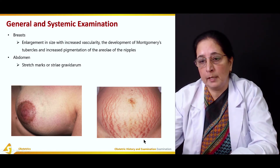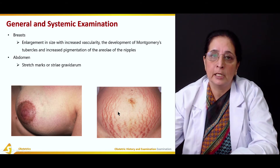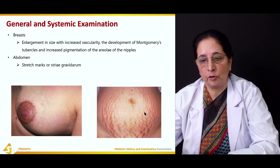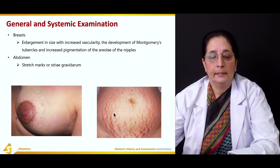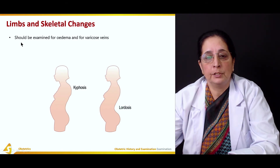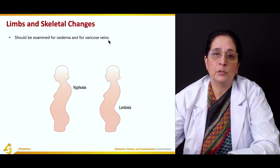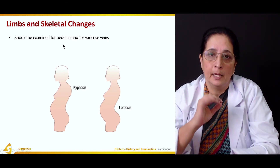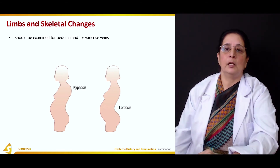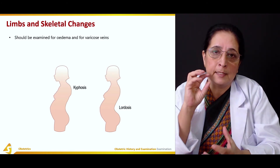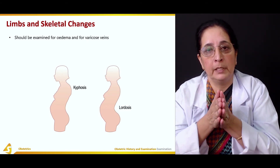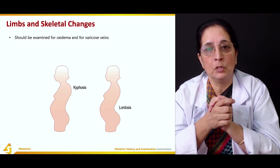Changes on the abdomen include stretch marks, or striae gravidarum, which are very common in pregnancy and persist after delivery. In the limbs and skeletal system, the patient should be examined for edema and varicose veins. Dependent pitting edema is very common in lower extremities — around the foot and ankle — because of pressure of the uterus on the vessels.